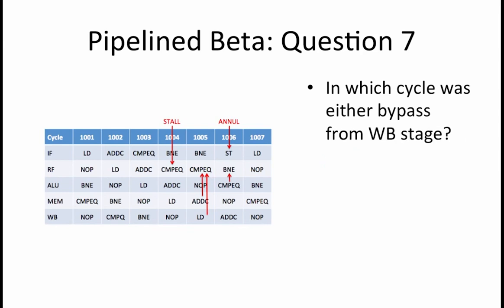Finally, in which cycle was either bypass coming from the writeback stage? In cycle 1005, the compareEqual reads the result of the load instruction from the writeback stage.